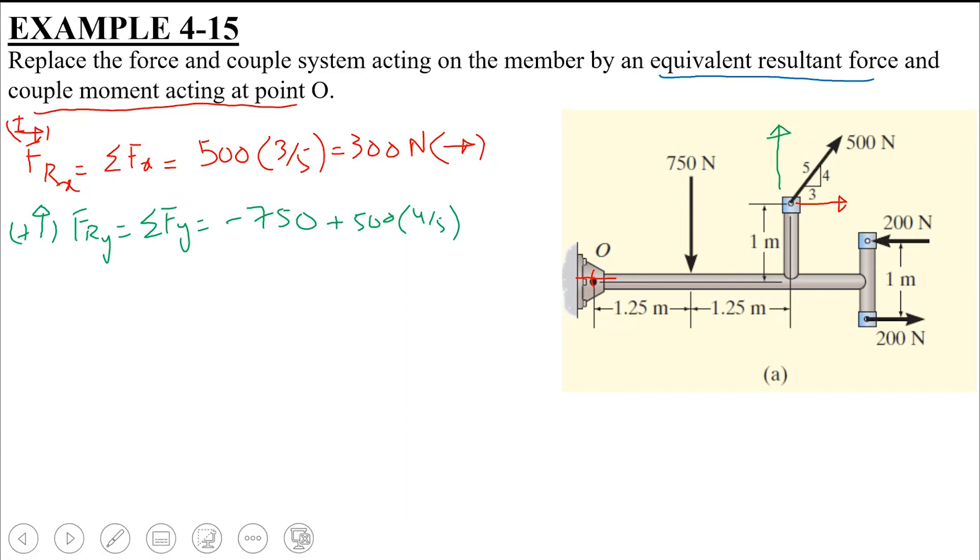So overall, this FRy would become equal to minus 350 N. And this negative sign indicates that this is acting towards the negative y axis.